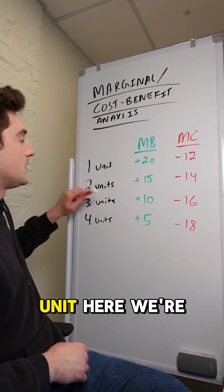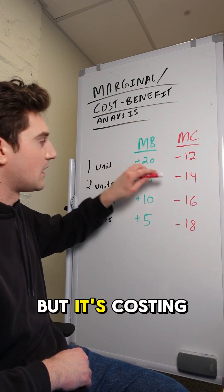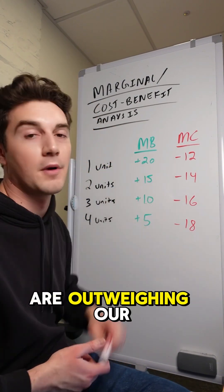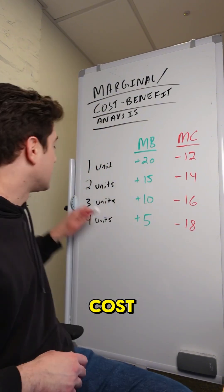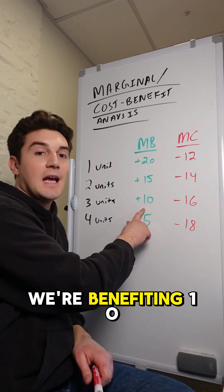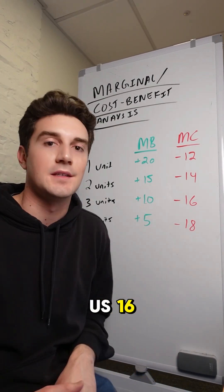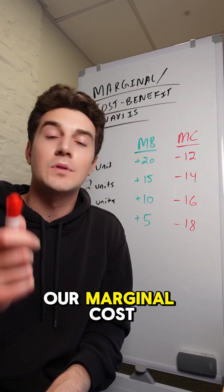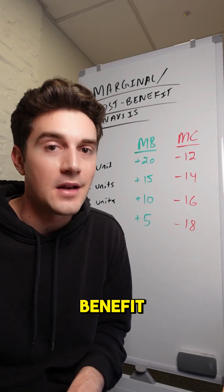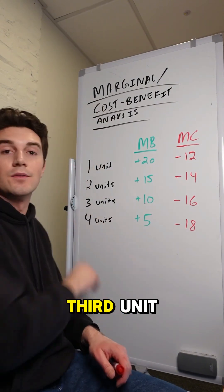For the second unit, we're benefiting 15 units but it's costing us 14 — we're still going to consume it because our benefits are outweighing our costs. Now for this third unit, we're benefiting 10 units but it's costing us 16. Our marginal cost is now greater than our marginal benefit, so we're not going to consume this third unit.